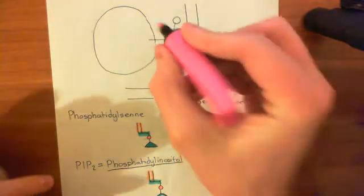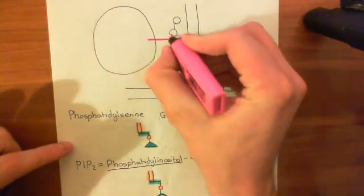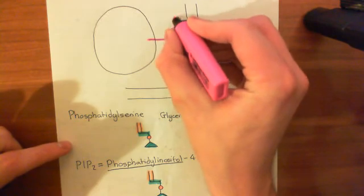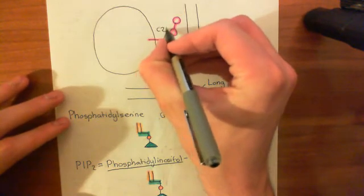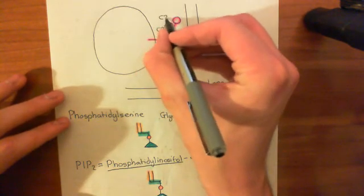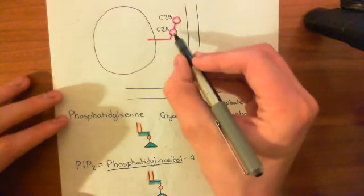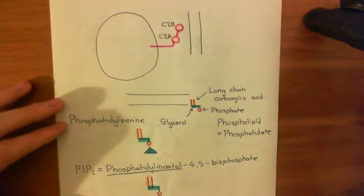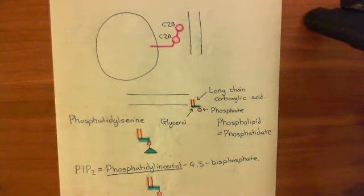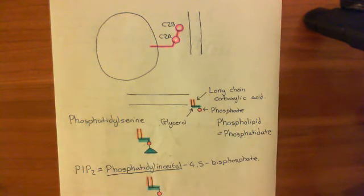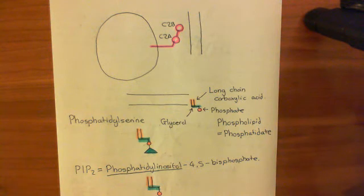This is our synaptotagmin molecule shown in bright purple here. These two circles denote the C2A and the C2B regions. Three calcium ions will bind to the C2A domain and two calcium ions to the C2B domain. When calcium is bound to these C2A and C2B domains, it causes the electrical potential of these domains to increase because positive charge has been added onto them. It does not cause any other conformational change — it just changes the electrical potential of these domains.